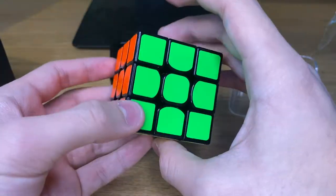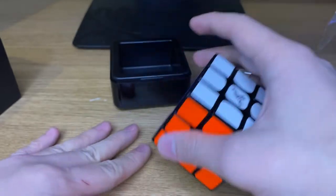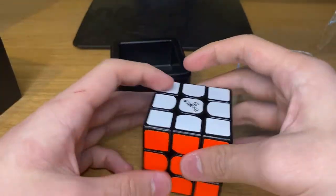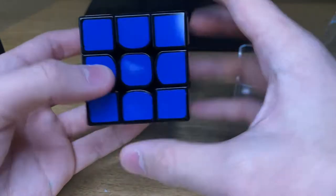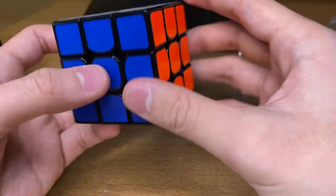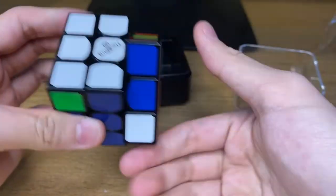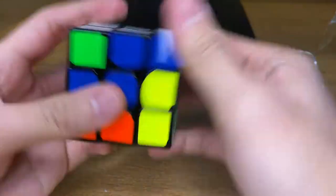But yeah, this is the Valk 3M. Look at the sticker shades though, this is really nice. This was the only one at Cubes UK. I didn't want to get the stickerless version because I thought stickered Valk would be more OG.